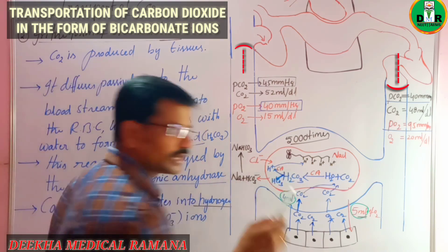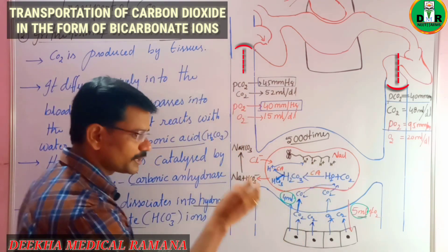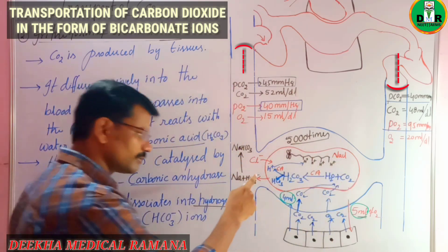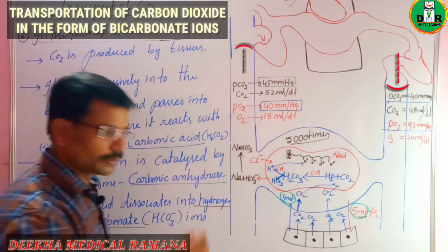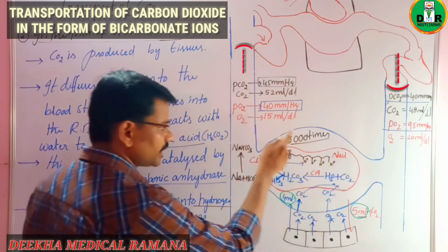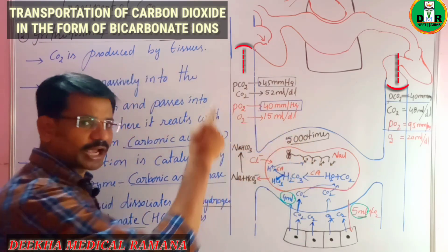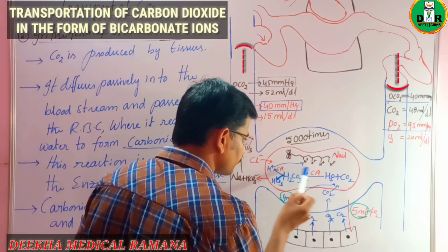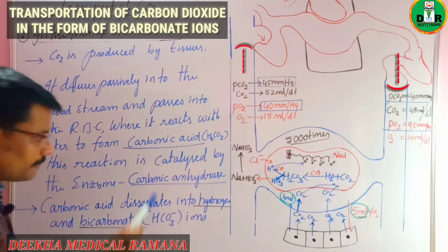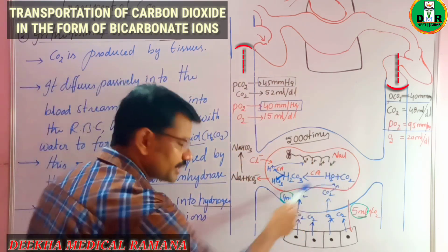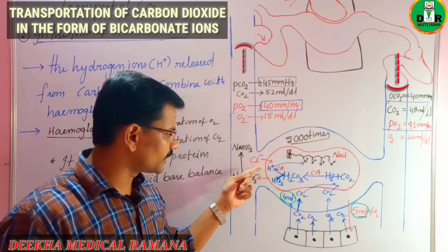An important point is that carbonic anhydrase is present in both the RBC and the plasma, so these reactions occur in both locations. However, the reactions in the RBC are 5000 times faster than in the plasma, because carbonic anhydrase is much more concentrated in the RBC. As a result, carbonic acid is dissociated into H⁺ ions and HCO₃⁻ ions within a fraction of a second.